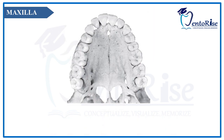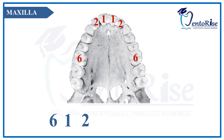Now let's start with the eruption sequence of the maxilla. The first permanent maxillary tooth to erupt into the oral cavity is the first molar. Therefore, the eruption sequence will start with tooth number 6. This is followed by the eruption of central incisor — tooth number 1 — then the lateral incisor — tooth number 2. However, after the eruption of the lateral incisor, the canine does not erupt. After the lateral incisor, the first premolar and the second premolar, represented by tooth number 4 and tooth number 5 respectively, will erupt into the oral cavity.